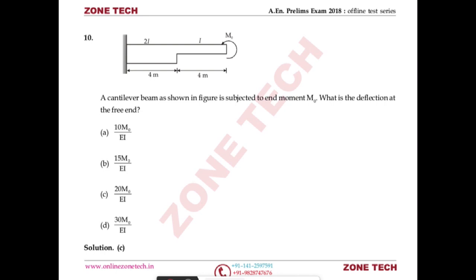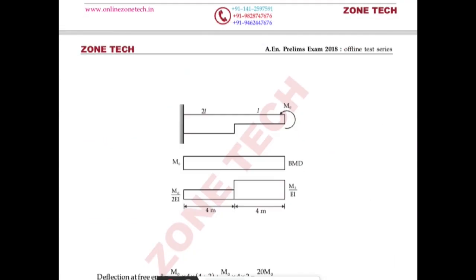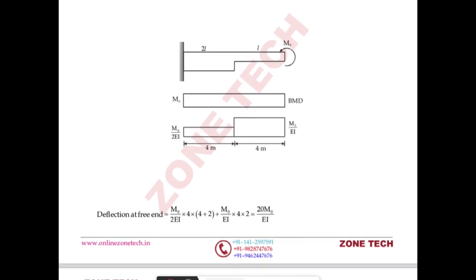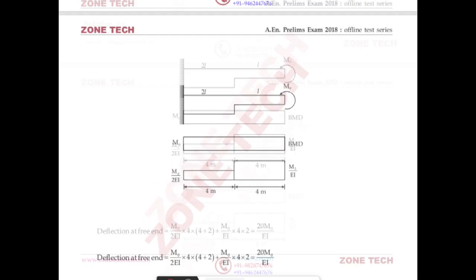Question number ten: a cantilever beam of full length with modulus of elasticity given to 2EI at the fixed end is subjected to an end moment M₀ at the free end. Find the deflection at the free end. Using the area moment method on the M/EI diagram, the deflection value works out to 20M₀/(EI). Answer: C.